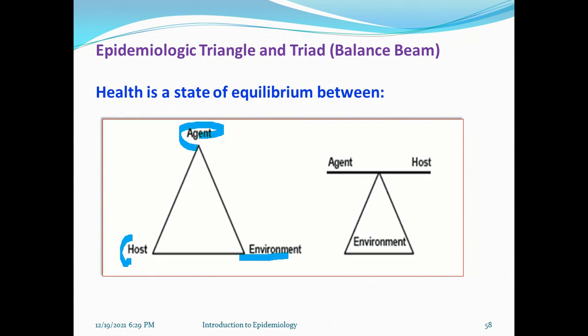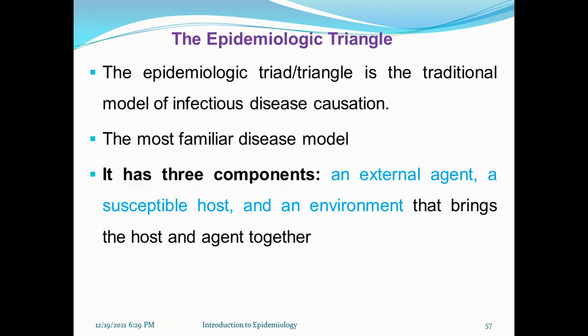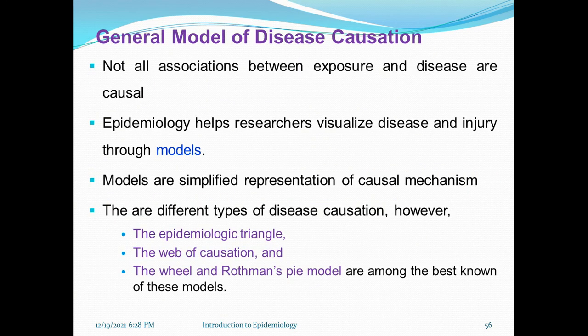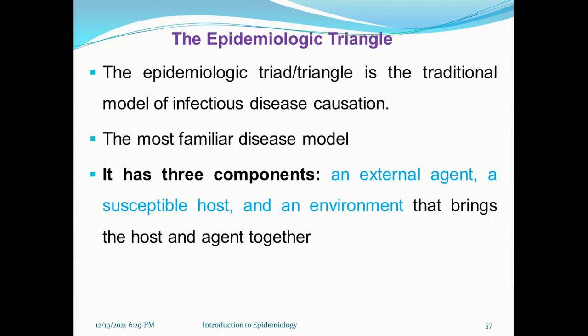Hello everyone. Last time we ended here. We have three types of modules: the epidemiological triad, web of causation, and Rothman's pie model. The first module is the epidemiological triad.